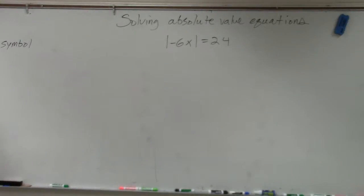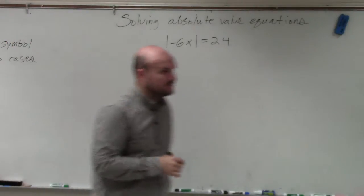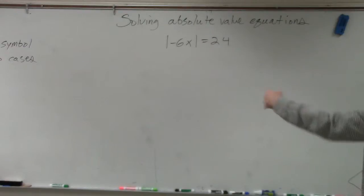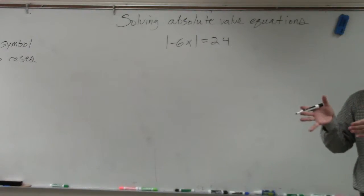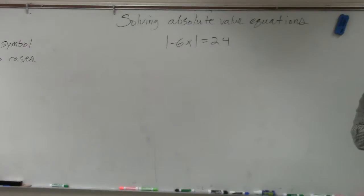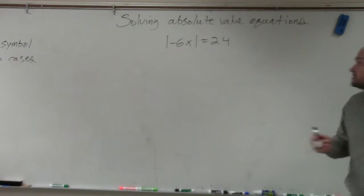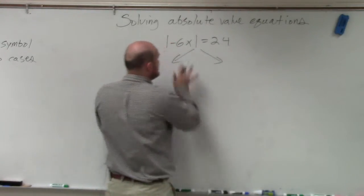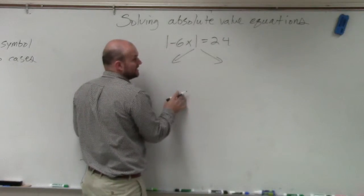Step number two is to create our two cases. What are our two cases? Remember, if the absolute value is equal to a quantity, then the quantity inside the absolute value could be positive or it could be negative. So we want to create the case where it's equal to positive and where it's equal to negative.